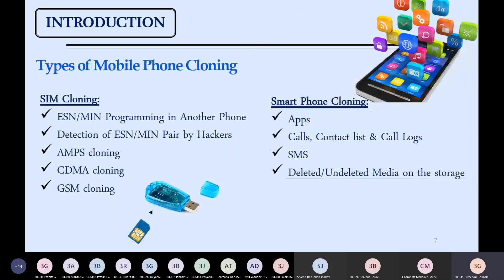Previously when the phone was just used for calling, SIM cloning was the main method because that was all the data the phone had — the ESN and MIN numbers. Now we have shifted to smartphones, and smartphone cloning is not just related to SIM cloning; it has a lot more to offer, like app data, passwords, call logs, and SMS. The major thing is that we can also get a clone of deleted data — for example, if I take an image and immediately delete it, using phone cloning or data recovery technology we can recover that recently deleted image as well.